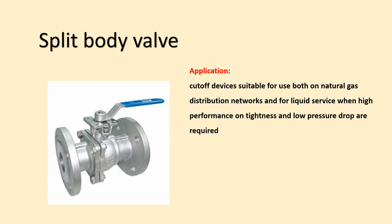Next is the split type valve body. It is not widely used; it is mainly used in gas industries because it is a cut-off device suitable for natural gas distribution networks and for liquid service when high performance on tightness and low pressure drop are required. This valve body offers tight shut-off while also providing very low pressure drop, so it finds its applications there, and is not widely used in process industries apart from gas industries.